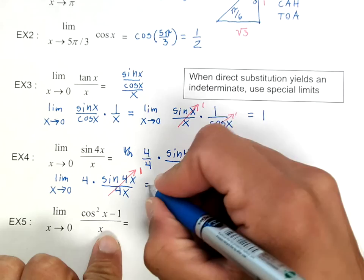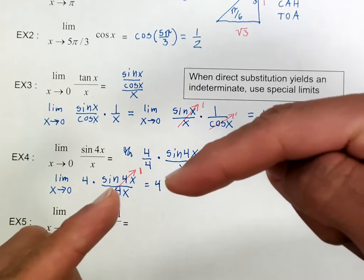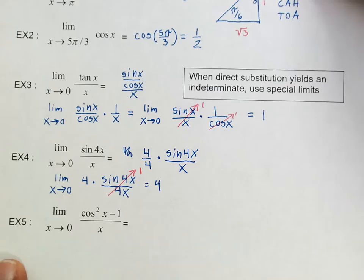And at that point I'm going to have 4 times 1, which is 4. So again, sine of 4x over 4x is the same kind of limit. It's approaching the same y value.